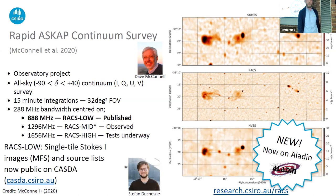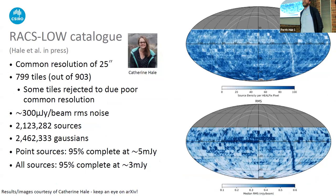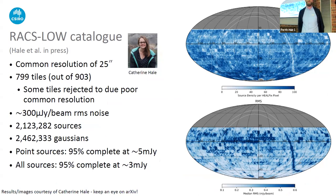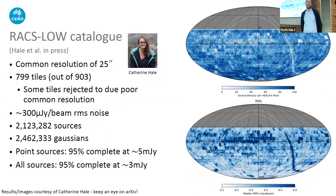Cataloguing work has been led by Catherine Hale, now at the University of Edinburgh. We selected a common resolution of 25 arcseconds for uniformity across the entire sky, selecting about 800 tiles out of the 900 or so, with around 300 microjansky per beam noise. Catherine has catalogued about 2.1 million sources from RACS in total intensity, corresponding to about 2.5 million Gaussian components. We're about 95% complete at 5 milliJansky for point sources, and about 3 milliJansky for all sources including extended ones.